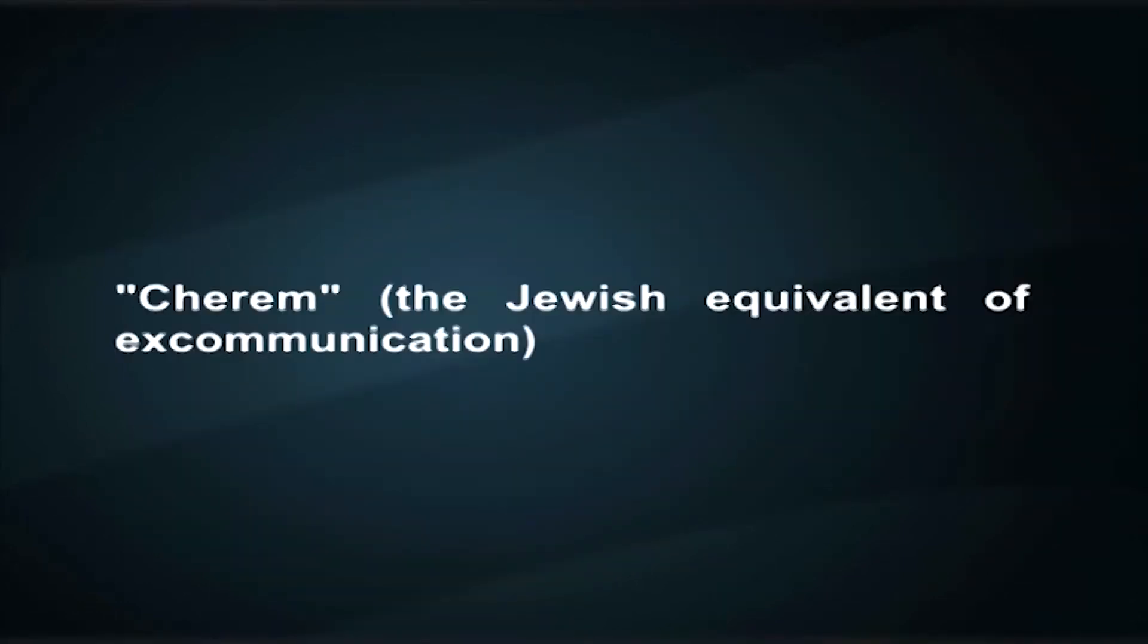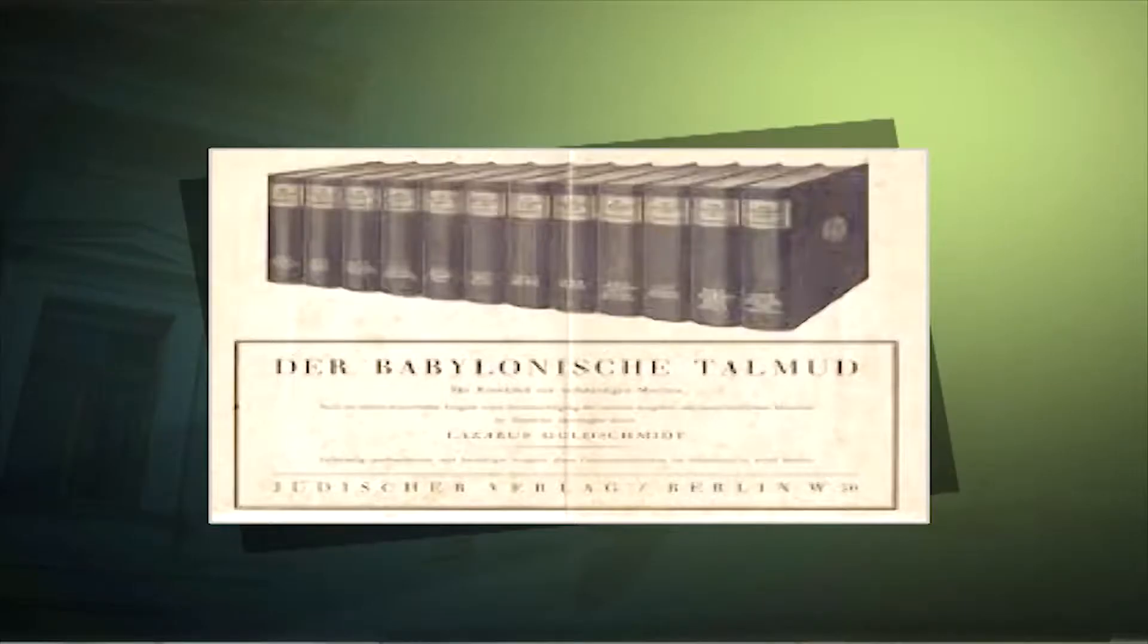In 1656, Spinoza was issued a writ of kherem, which is the Jewish equivalent of excommunication, for the apostasy of how he conceived God and for various positions contrary to normative Jewish belief and his criticisms of the Talmud and other religious texts. He had reportedly been offered a thousand florins to keep quiet about his views, but had refused on principle. Following his excommunication, he adopted the first name Benedictus or Benedict, which is the Latin equivalent of Baruch, meaning blessed, or more informally, the Portuguese equivalent, Bento.